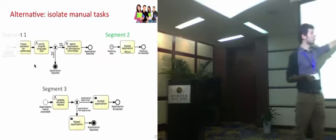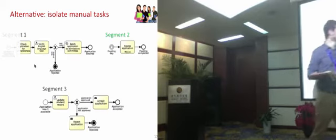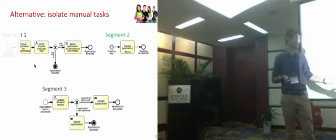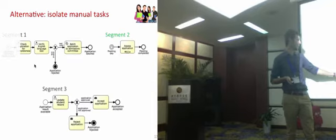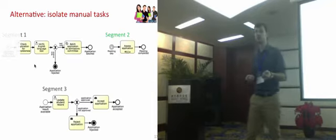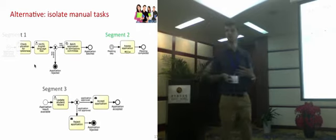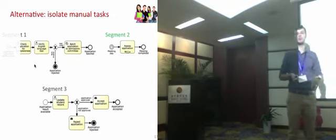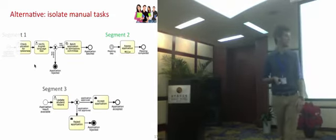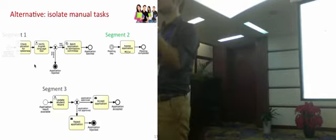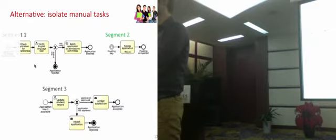Segment one will finish once all applications have been batched; segment two is the actual assessment of the application; and segment three is the automatic notification of the result to the student. Here we put a user task — 'update student record' — where the admin officer takes all results of assessed applications and reports this information into the system using the BPMS, upon which the BPMS sends a bunch of notifications. This example divides the process into three fragments, one of which is entirely left out of BPMS control.